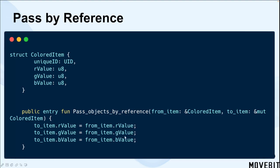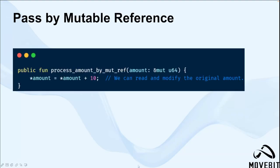And here is the passByMutableReference. This method is similar to passByReference, but it also allows the function to modify the original data. In this example, the processAmountByMutableReference receives the mutable reference to a U64 type parameter amount. You can read and increment the original amount.